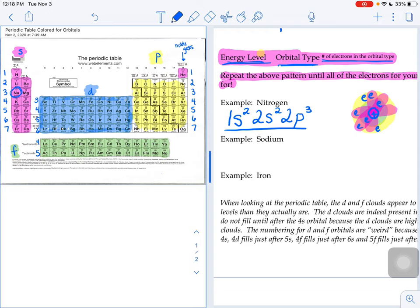And the good news about electron configurations and the whole ticket master analogy is that whoever needs seats, they're always the first caller. They always get dibs on the best seats in the house. So what that means is the pattern is going to look very similar to nitrogen. It's just that we have to go a little bit further in our electron configuration. Rather than stopping at seat number seven, we're going to stop at seat number 11 this time.